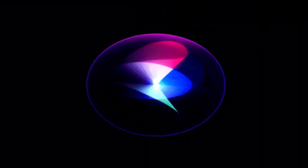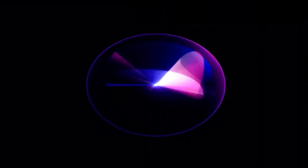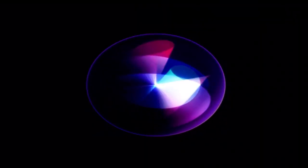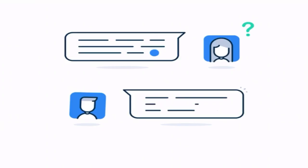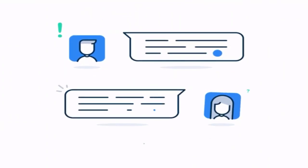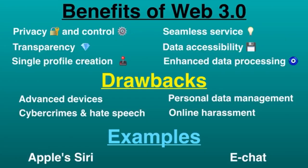Examples of Web 3.0 include Apple's Siri, which is a perfect example of voice recognition software as a main component of Web 3.0. eChat is powered by decentralized blockchain technology. Wolfram Alpha, IDEX, and many more are also included.